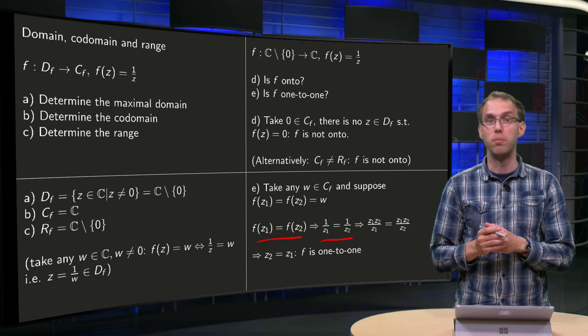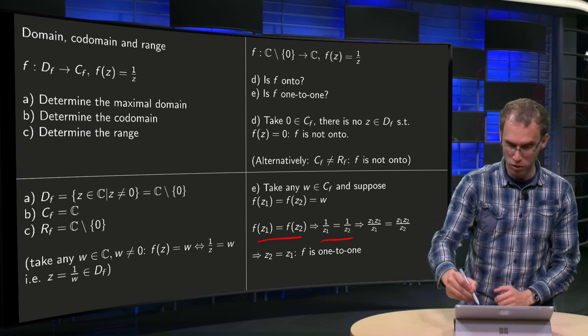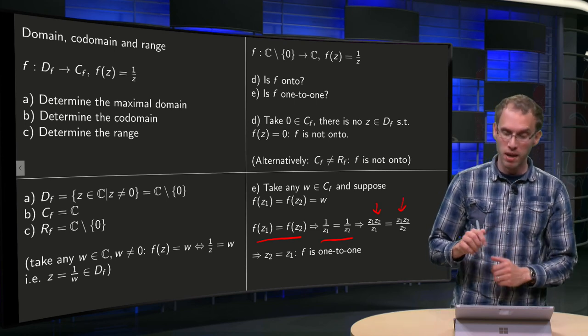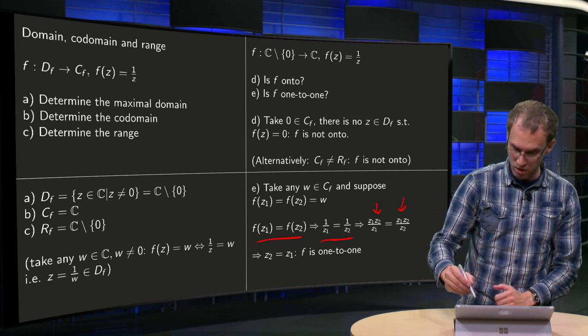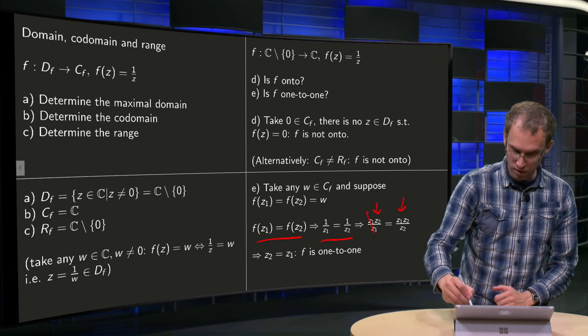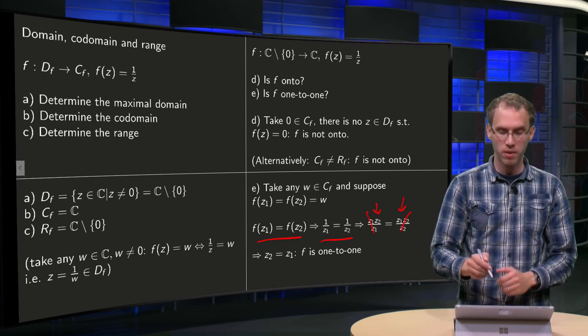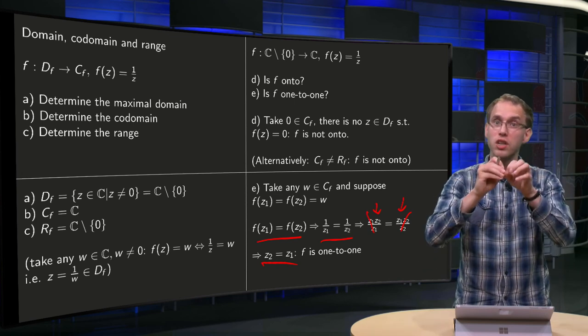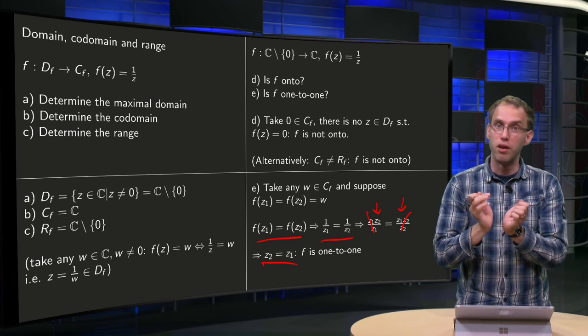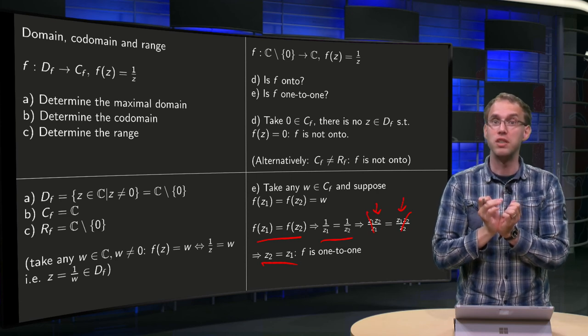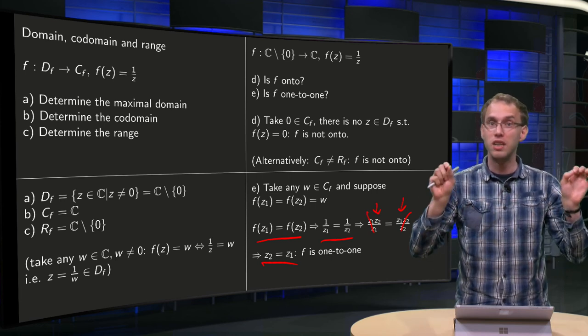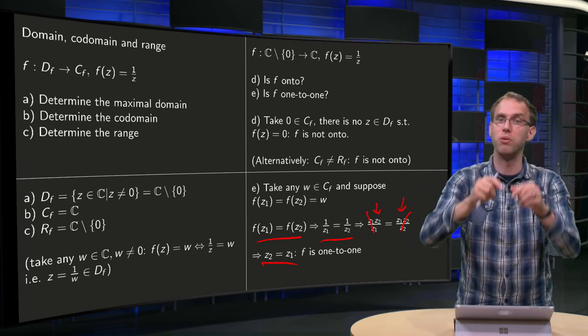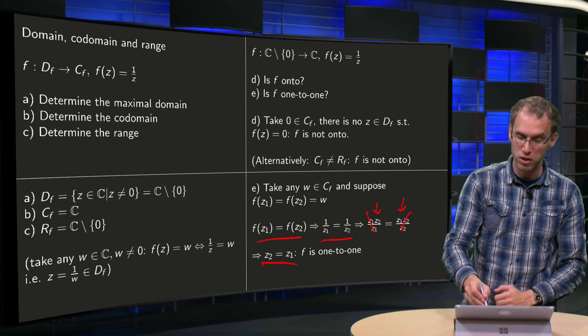z1 and z2 are both in the domain, so particularly they are non-zero, so you can multiply by the product z1 and z2 on both sides. And then when you do that you see that you can eliminate z1 over z1 and z2 over z2 here, which leads to the conclusion that z2 equals z1. So you see if the function values are the same, then the values in the domain also have to be the same, which means that there are no different z1 and z2 mapping to the same function value, which means that our function f is one-to-one.